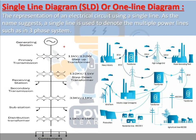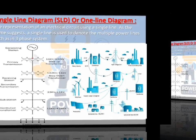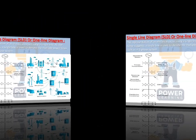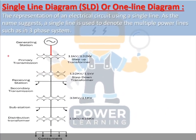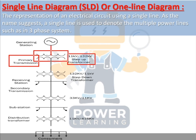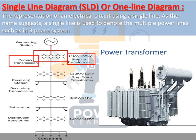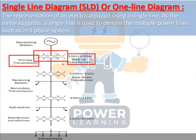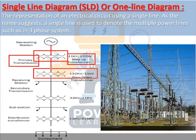After the generating station, a single line connects to the primary transmission via a step-up transformer. In a single line diagram, just one symbol represents the entire primary transmission system — the exact number of conductors is not shown. This helps you understand how the project components are connected equipment by equipment. After that, the line connects to a step-down transformer.